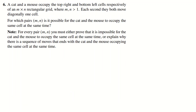Question number six — we have an m-by-n grid where the cat starts at the top left and the mouse at the bottom right. They move diagonally simultaneously, and we need to determine for which pairs m, n it's possible for them to occupy the same square at the same time. This requires proving impossibility or showing an explicit sequence. Since m and n can be any integers greater than one, we need to group the cases — almost certainly by odd/even parity.